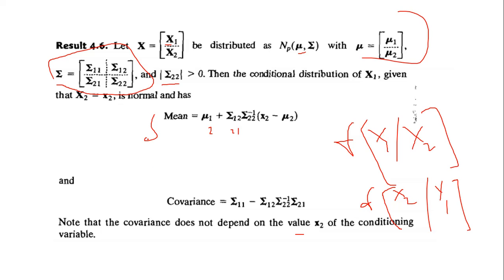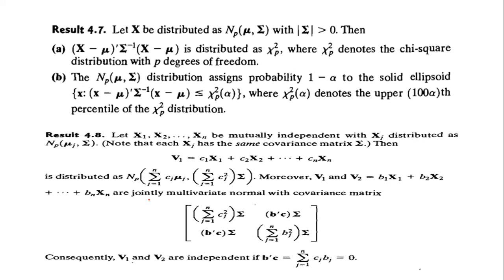Result 4.7 is related to testing. If x is distributed as normal with p components mu and sigma, with sigma greater than 0, then (x minus mu)' * sigma-inverse * (x minus mu) is distributed as chi-squared with p degrees of freedom. This chi-squared p denotes the chi-square distribution with p degrees of freedom. We will discuss this in detail in the testing part.